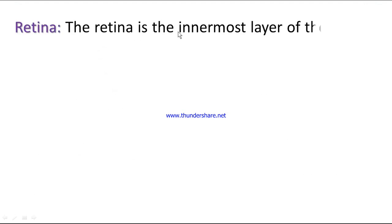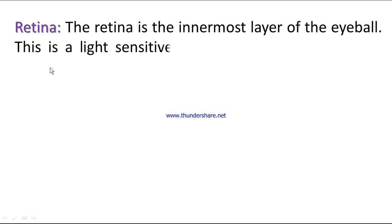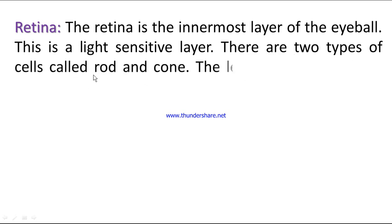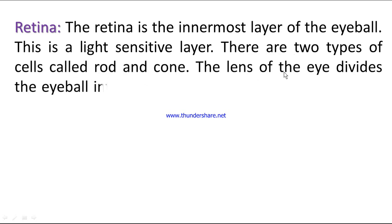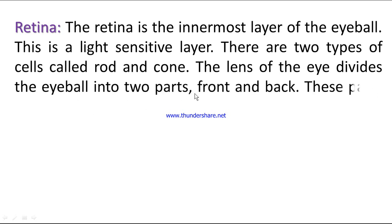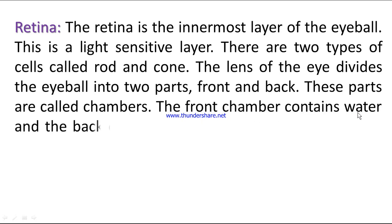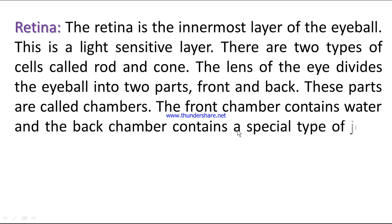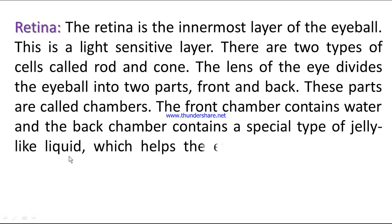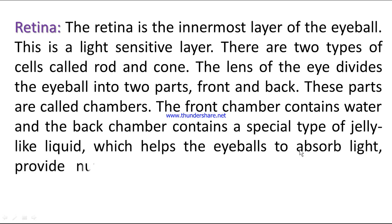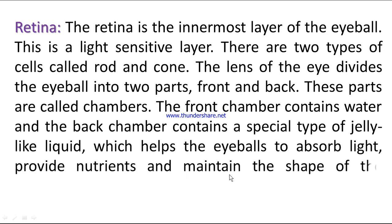Retina: the retina is the innermost layer of the eyeball. It is a light-sensitive layer containing two types of cells called rod and cone. The lens of the eye divides the eyeball into two parts — front and back — called chambers. The front chamber contains water and the back chamber contains a special jelly-like liquid which helps absorb light, provide nutrients, and maintain the shape of the eyeball.